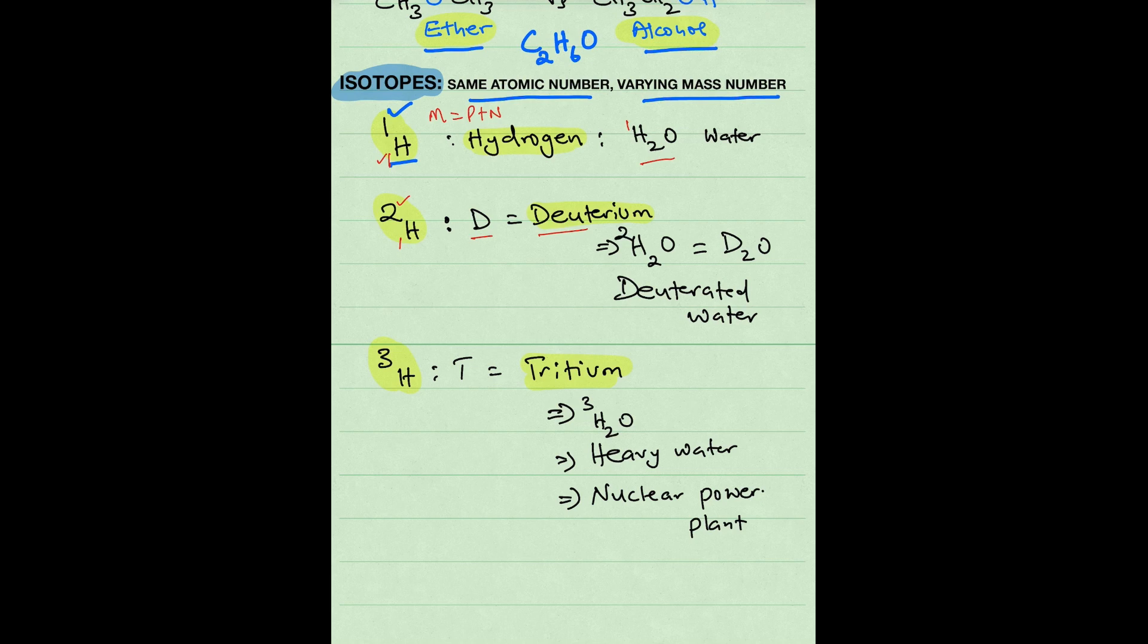An example of that is deuterated water, D2O, or you can also write it as 2H2O, where this 2 is the mass of hydrogen. And this is used in NMR spectroscopy.